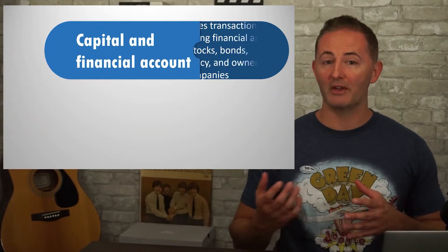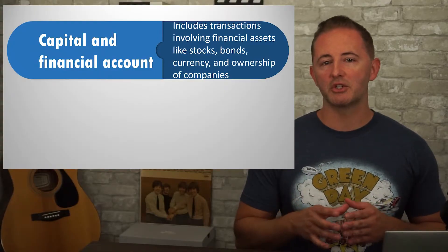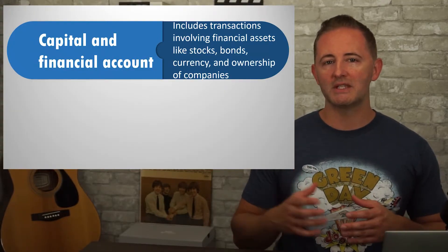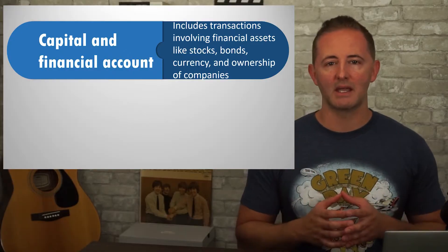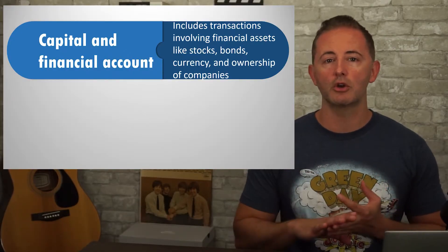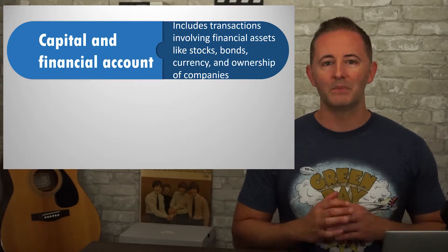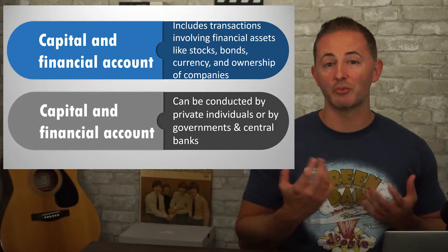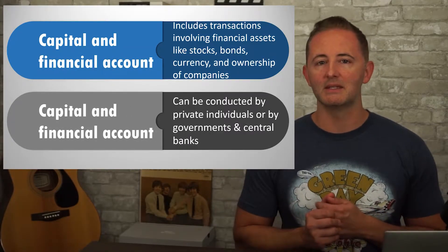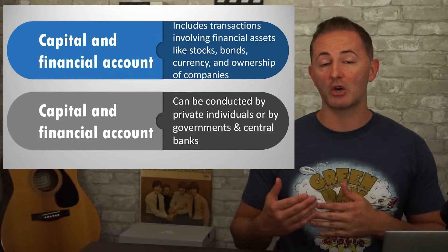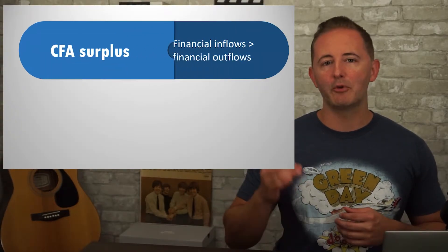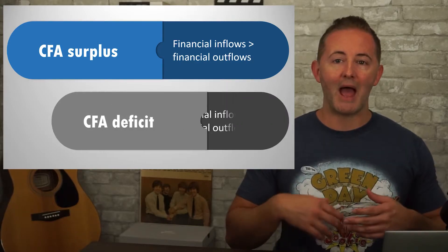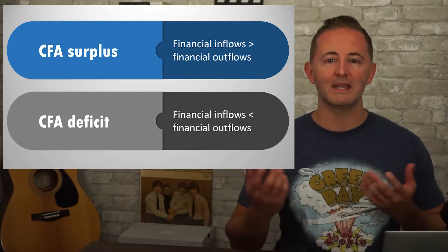Then there's the capital and financial account, which records international transactions that create a liability and includes transactions involving financial assets such as stocks, bonds, currency, and ownership of companies. These transactions can be conducted either by governments and central banks or by private citizens. When financial inflows are greater than outflows, the capital and financial account is in surplus, and when financial outflows are greater than inflows, it's in a deficit.